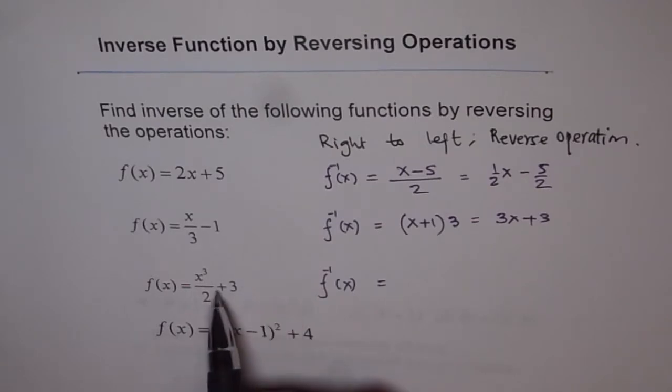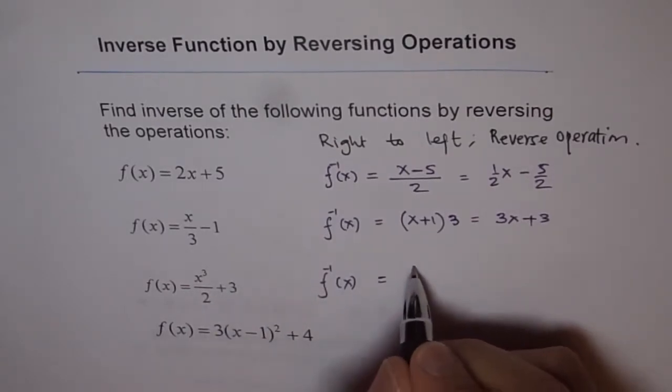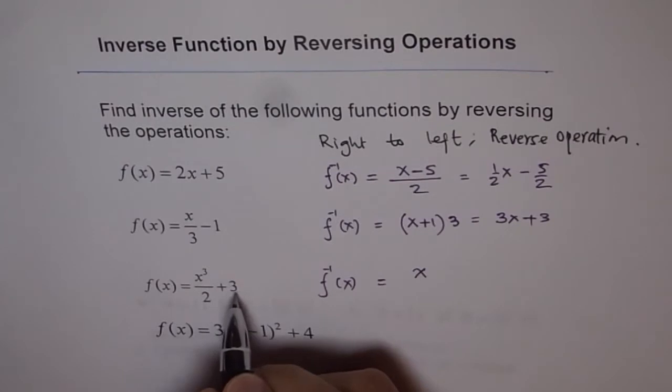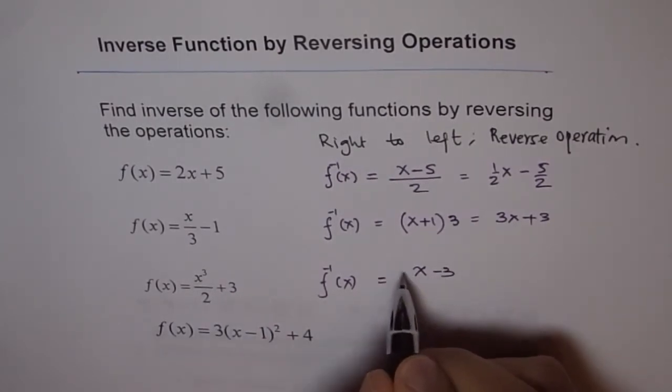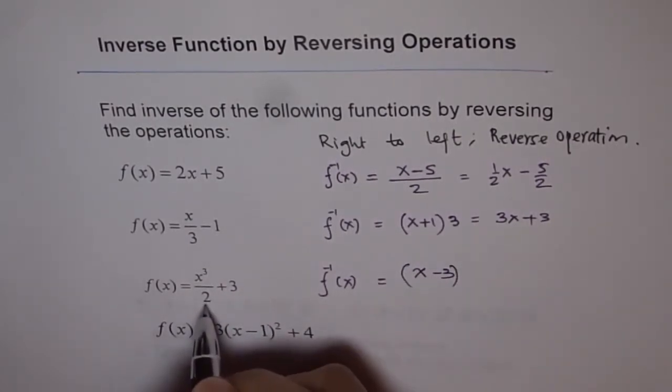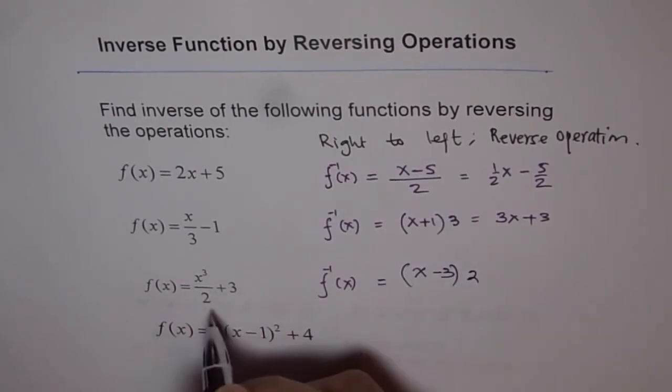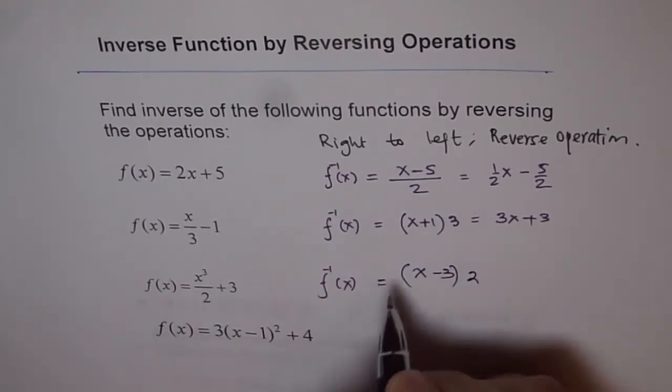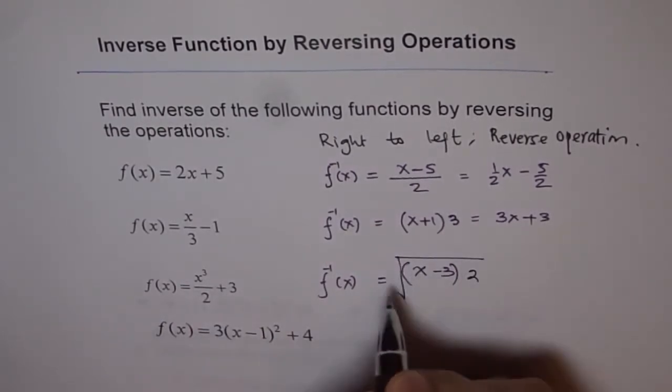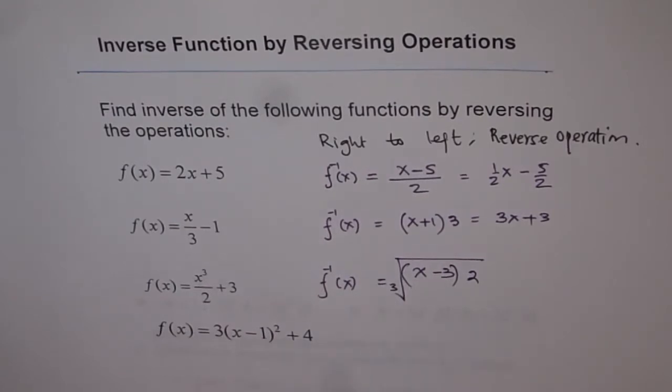So what we will do now? Reverse. So reverse, that means if I give you an input now, you take away 3. And then you multiply by 2, division reversal is multiplication. And then find the cube root. That should be your answer for this.